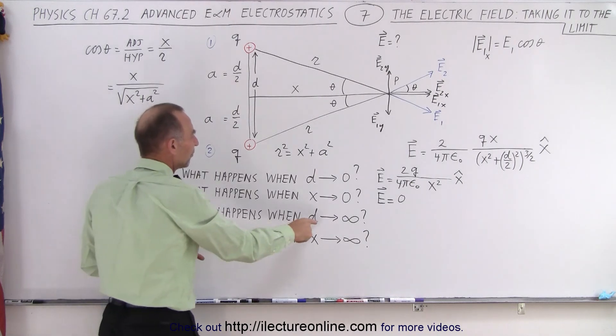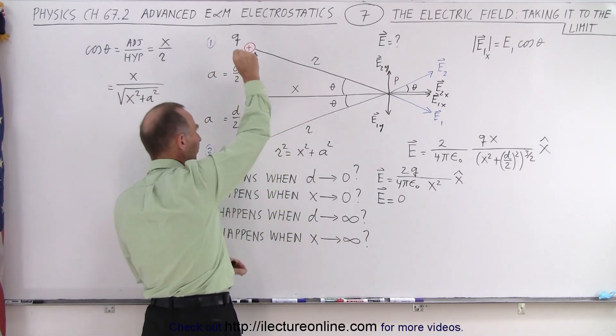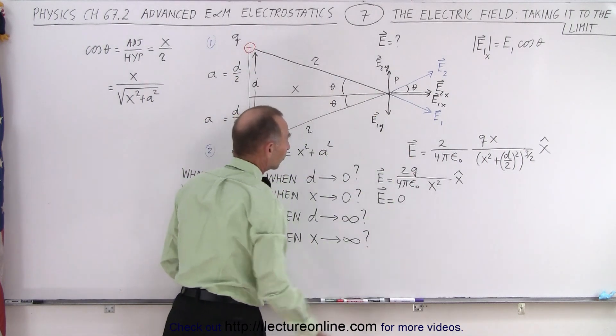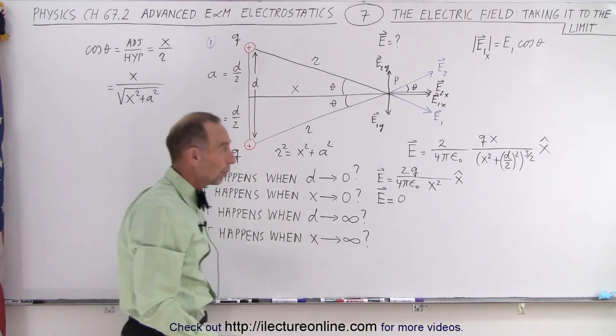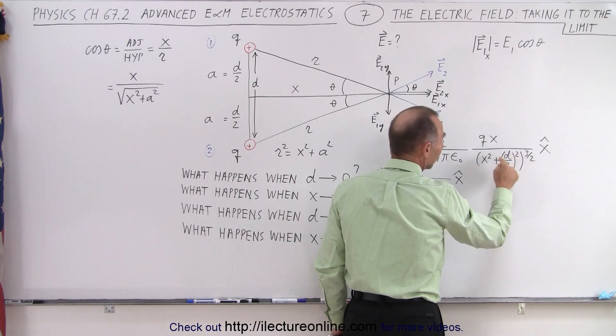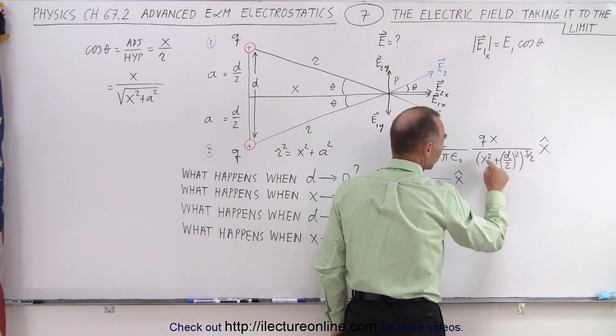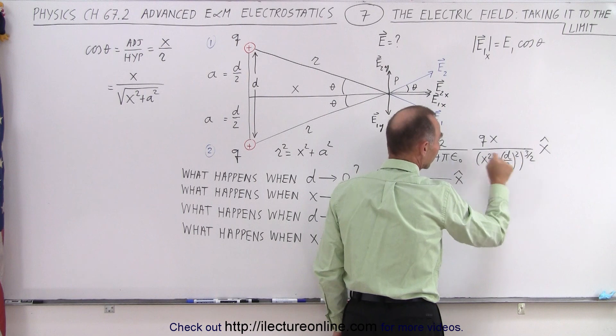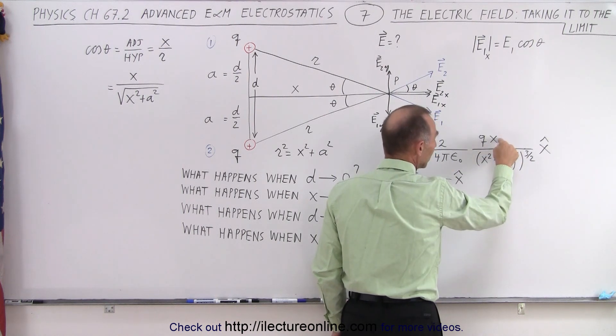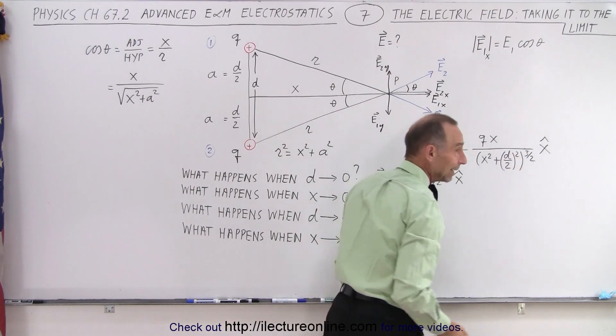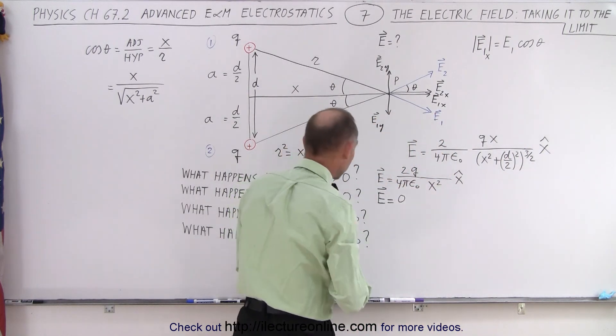What if d goes to infinity? What if we now take the two charges and keep moving farther and farther apart. As the distance becomes extremely large relative to the distance x. Well we can see here that if d becomes almost infinitely large, that would be much larger than x. Essentially we can get rid of the x. x would essentially be 0 in terms of the value d. And if x is really small relative to the value d, then essentially we get some small number divided by infinity in the denominator, and the whole thing would go to 0 again.